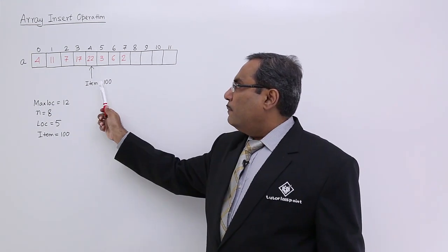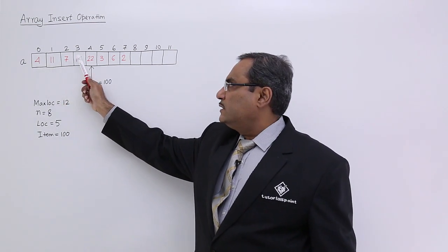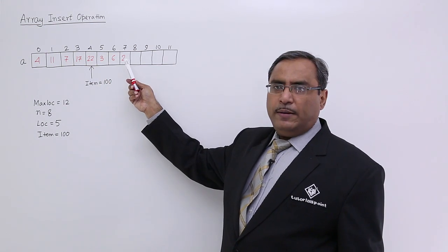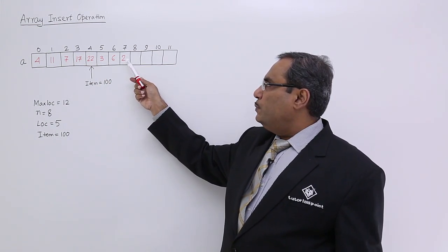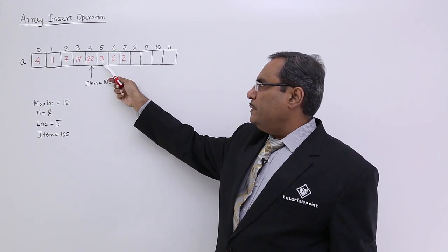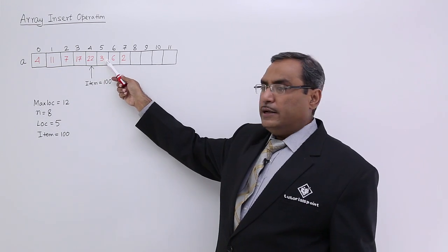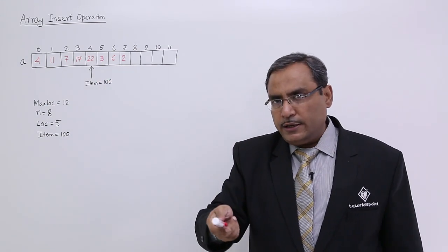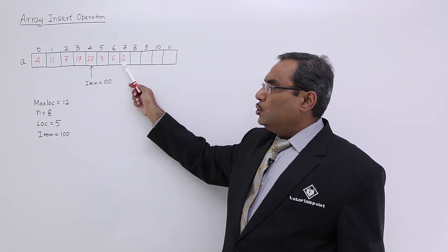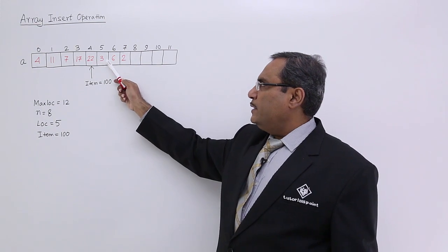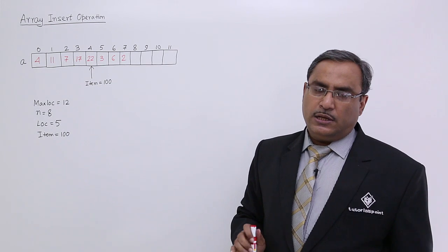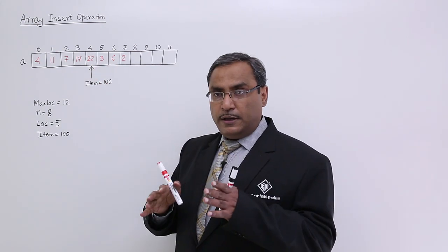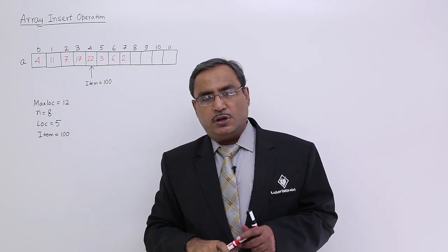Here index is equal to 4, but the location number counting from first is fifth. So at the fifth location I am going to perform the insertion. The shifting of data is done as follows: 2 will be moved to the next place, 6 to the next, 3 to the next, and 22 to the next. I should not start shifting from 22 because then 3 will get overwritten. So I should start shifting from the last element — 2 moves, then 6, then 3, then 22. In this way the shifting takes place, the space becomes free, and then 100 can be placed there, completing the insertion.